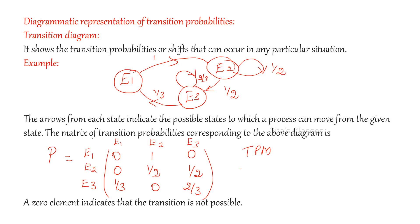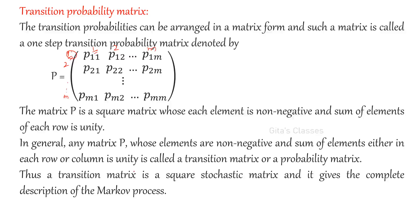The transition matrix is a square stochastic matrix and it gives a complete description of the Markov process. If you know the TPM, we can find out the Markov process. This is just an introduction; even the theory part and definitions can be asked for two marks. Please go through that and we will see more problems in the next class. Thank you so much for listening.